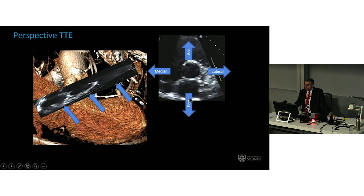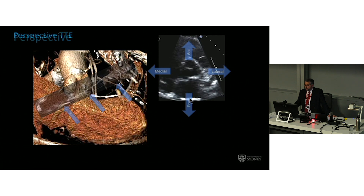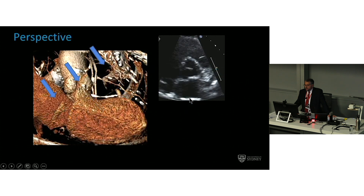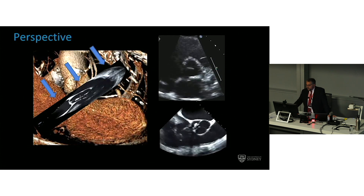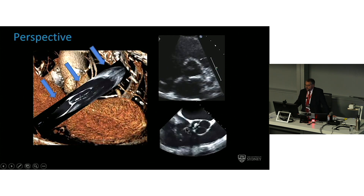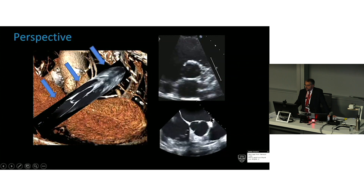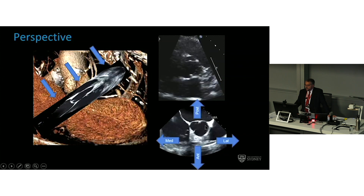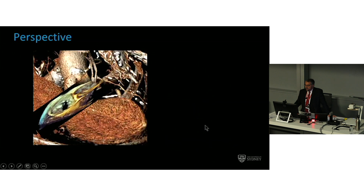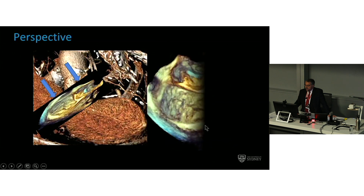Lateral, medial, anterior, posterior. Now in transesophageal echo, we tend to look from above, and the same rules count. There is the atrial septum, therefore non-coronary cusp. The most anterior is therefore the right coronary cusp. The left atrial appendage is just here, so therefore that's the left coronary cusp.